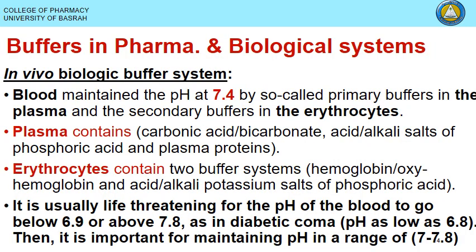In biological systems, blood maintains pH at 7.4. The primary buffer system comes from plasma — mainly carbonic acid and bicarbonate, acid-alkali salts of phosphoric acids, and plasma proteins. The secondary buffer system comes from RBCs, which contain hemoglobin, oxyhemoglobin, and acid-alkali potassium salts of phosphoric acids.